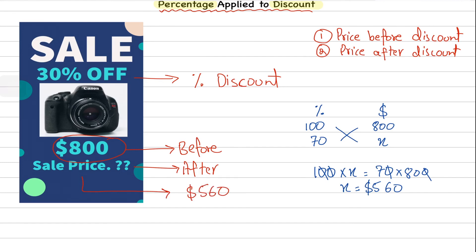In some cases the question may ask you to calculate how much money you save. We can work that out by taking the difference of this $800 and this $560. If we take the difference, $800 minus $560 equals $240. This is the amount that we save or the amount of discount that you're getting.